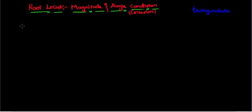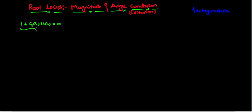Let's take an equation 1 plus G(s)·H(s) equals to 0. This is the characteristic equation of a closed loop system with open loop gain as G(s)·H(s) and open loop transfer function as G(s). The root locus is nothing but the roots of this particular equation when one of the parameters of this system is varied.